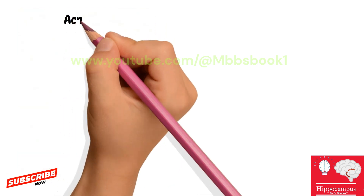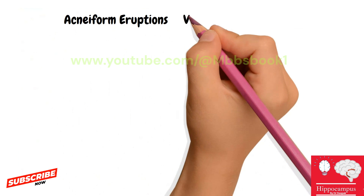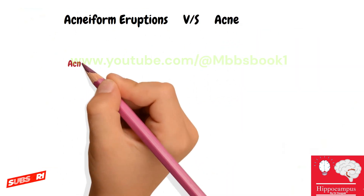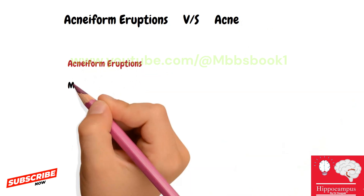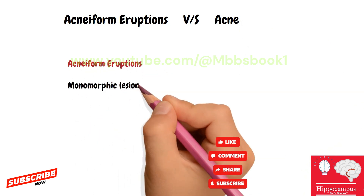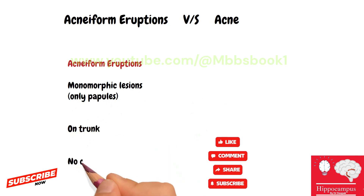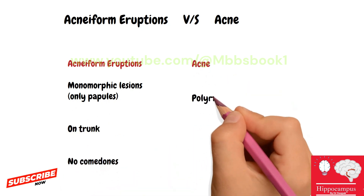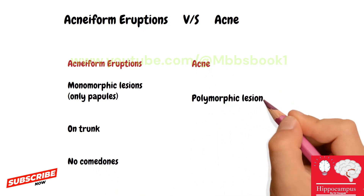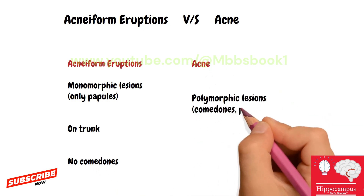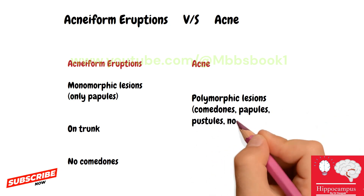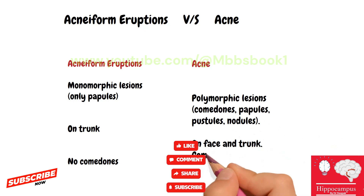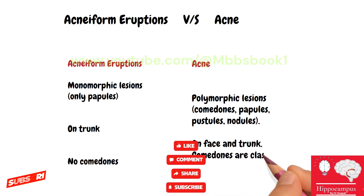Now let's look at the difference between acneiform eruption and acne. In acneiform eruption, lesions are monomorphic, present on the trunk, and there are no comedones. In acne vulgaris, lesions are polymorphic — including comedones, papules, pustules, and nodules — present on the face and trunk. Comedones are classical in acne.